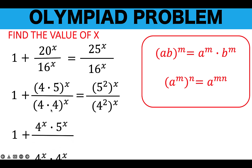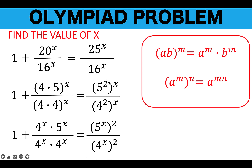For the right side, we apply the second property: when you have a raised to m, all raised to n, we can copy the base and multiply the exponents m times n. Since multiplication is commutative, we can interchange the order. So we rewrite 5 squared raised to x as 5 raised to x raised to the second power, and do the same thing for the denominator, switching the exponent 2 and x to make it x and 2, both for the numerator and denominator.